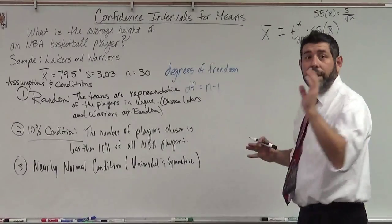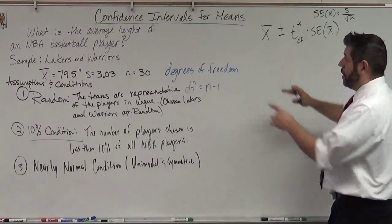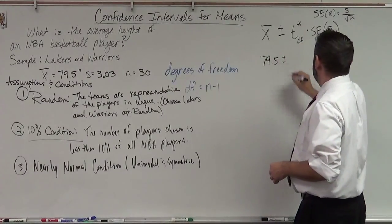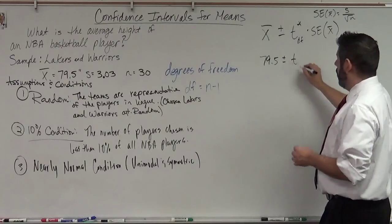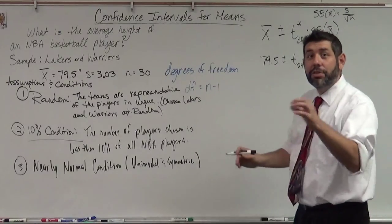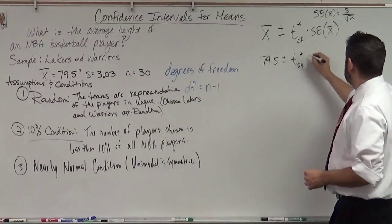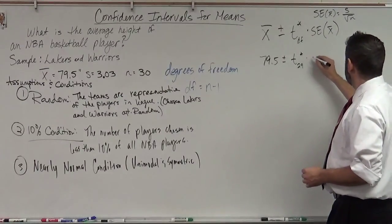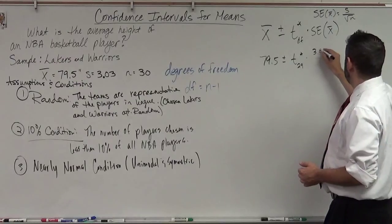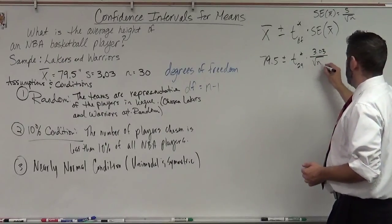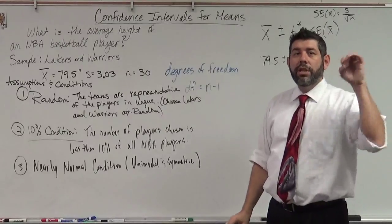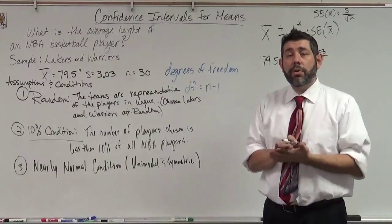Let's plug in what we know. x-bar is 79.5. T-star we don't know yet. We do know our degrees of freedom: it's 29, because 30 minus 1. T-star times s, which is 3.03, divided by the square root of 30. So we need to find t-star. Let me show you how to find t-star using a table of values.